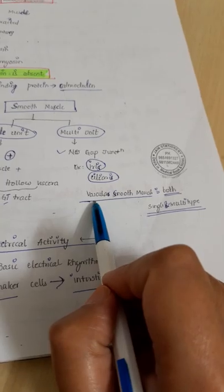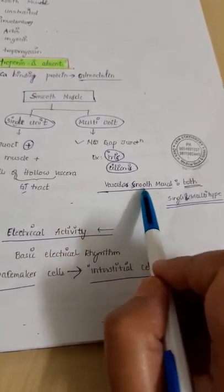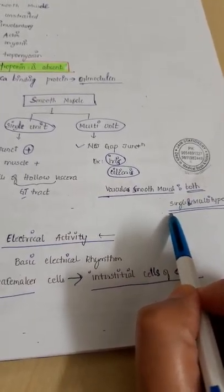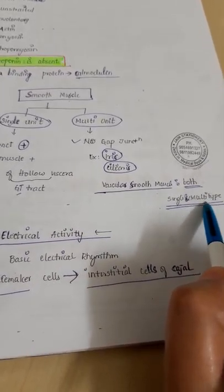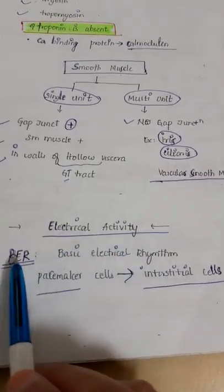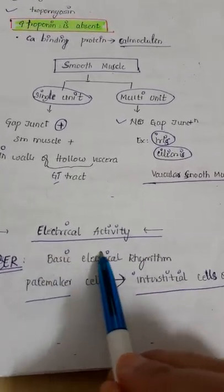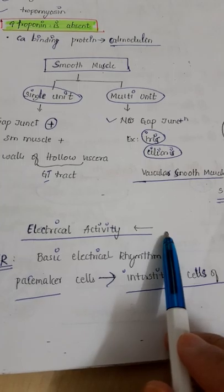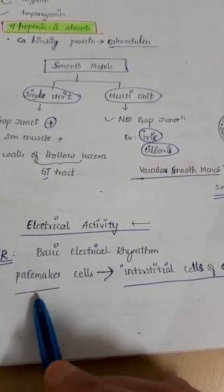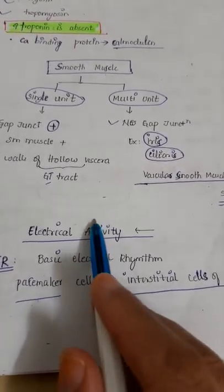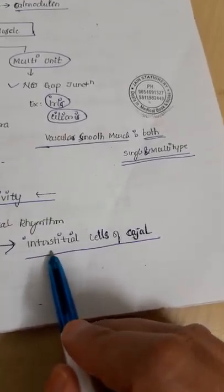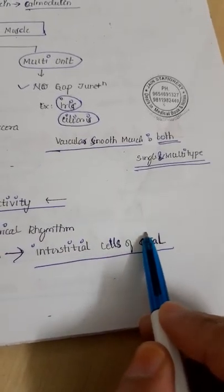Ciliary muscles have both single unit type and multi-unit type. Electrical activity is BER, basic electrical rhythm. Here we have to remember that we do have pacemaker cells in the GI tract. These are interstitial cells of Cajal.